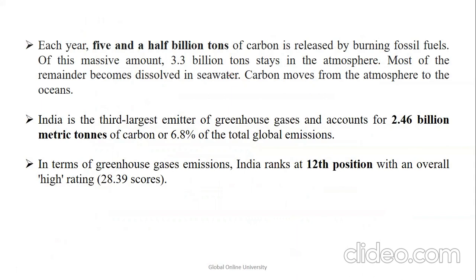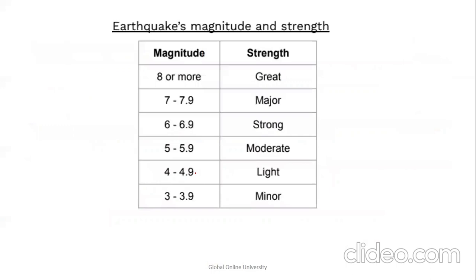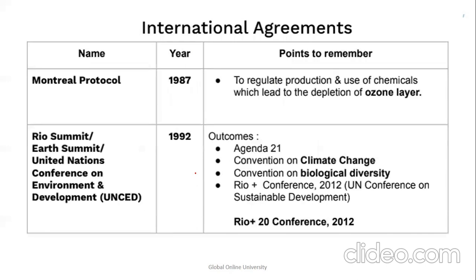Every year, 5.5 billion tons of carbon are released by burning fossil fuels; 3.3 billion tons stays in the atmosphere and the rest dissolves in seawater. India is the third largest emitter of greenhouse gases, accounting for 2.46 metric tons or 6.8% of total global emissions. For earthquakes, magnitude and strength: scale 8+ — great; 7–7.9 — major; 6–6.9 — strong; 5–5.9 — moderate; 4–4.9 — light; 3–3.9 — minor.